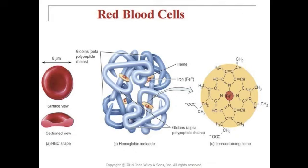On the right of this diagram we see an iron-containing heme group — essentially one of those discs pointed out in the hemoglobin molecule, shown magnified and in its chemical appearance.